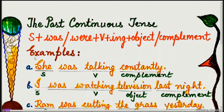Example A: She was talking constantly. 'She' is the subject, 'was talking' is the verb with additional -ing, and 'constantly' is the complement.